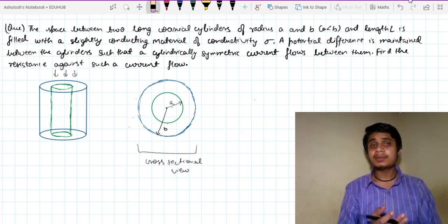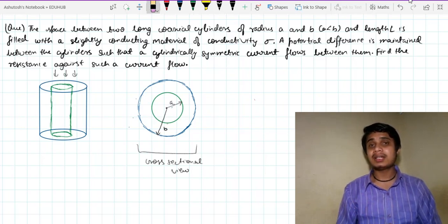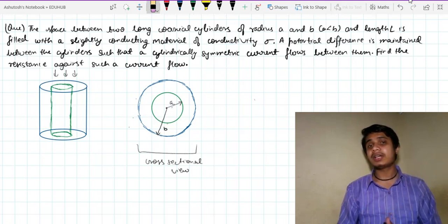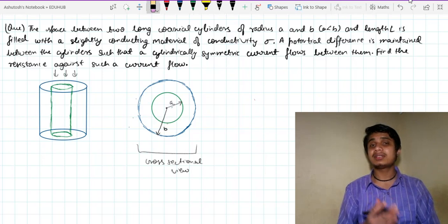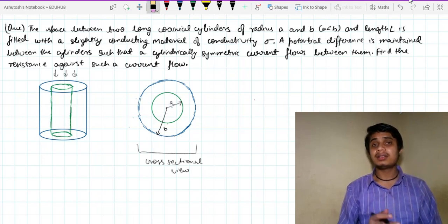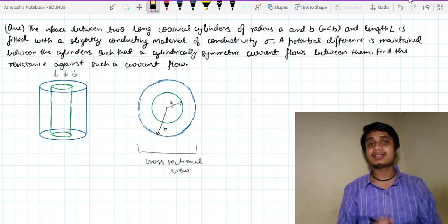The problem says that the space between two long coaxial cylinders, that means I have two long coaxial cylinders. What are coaxial cylinders? The cylinders whose axis is the same, such as concentric, what we say, concentric circles.